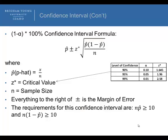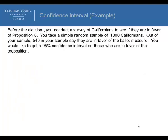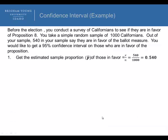So let's go through one example. Before the election, you conduct a survey of Californians to see if they are in favor of Proposition 8. You take a simple random sample of 1,000 Californians, and out of your sample, 540 say they are in favor of the ballot measure. You would like to get a 95% confidence interval on those who are in favor of the proposition. The first step is get the estimated sample proportion, or p-hat, of those in favor. We would take 540 divided by 1,000, which equals 0.540.